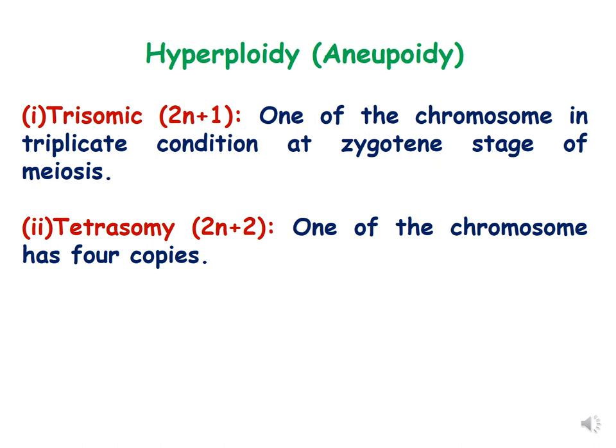Hyperploidy, the second class of aneuploidy, is when there are more chromosomes than the diploid counterparts. The first is trisomic, where one of the chromosomes is in triplicate condition — one extra chromosome — so it is represented with 2n plus 1. Tetrasomy is when one of the chromosomes has four copies, so there are two extra chromosomes, represented with 2n plus 2.